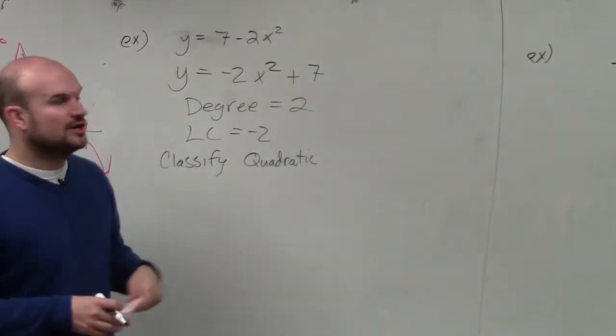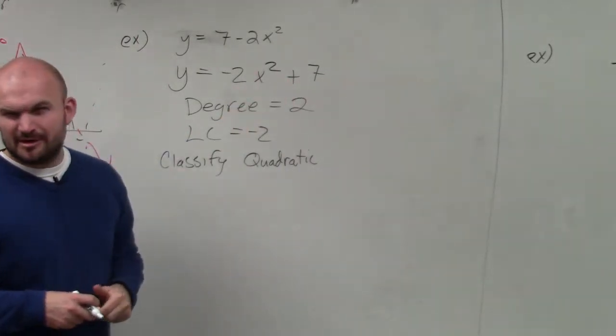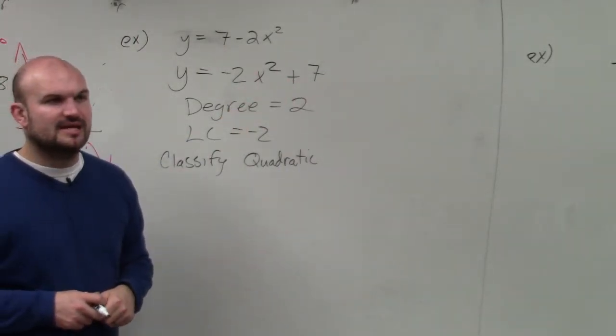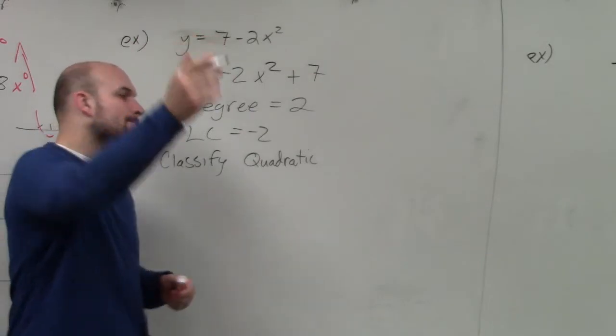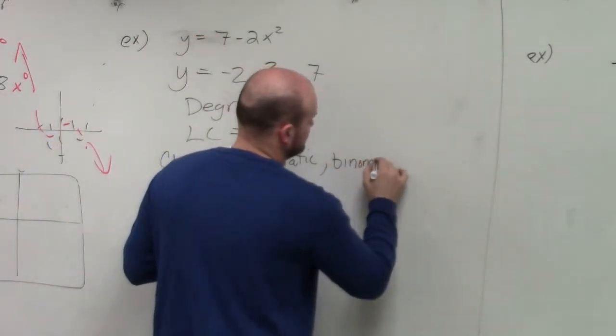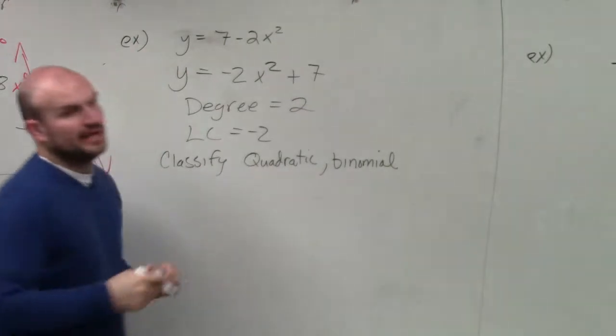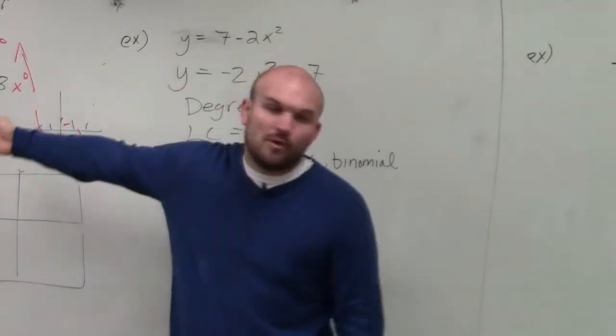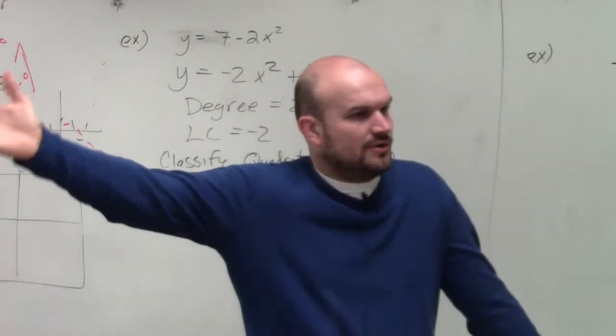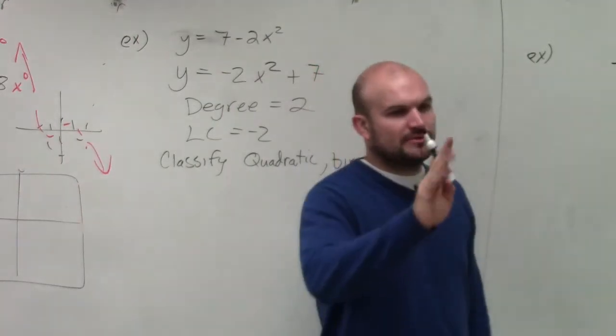So then we count the number of terms. This one only has two terms. Does anybody remember what we call a polynomial with two terms? Yes, Shaw? Binomial. OK? And the same thing. This one had four terms. That's why we didn't have a classification for it, because we only go up to three terms.